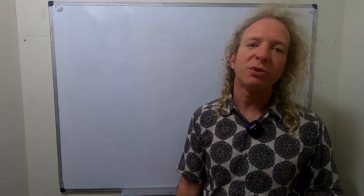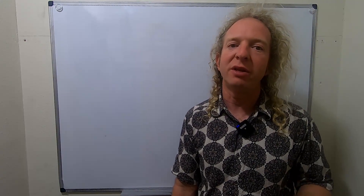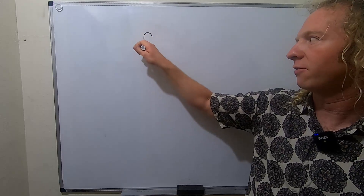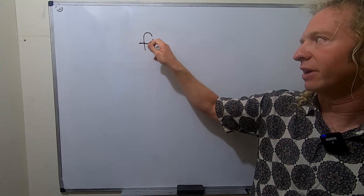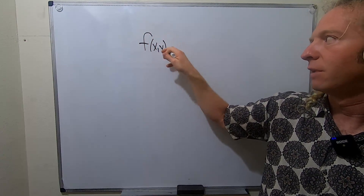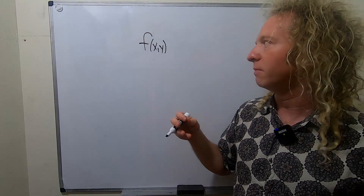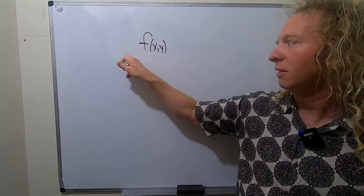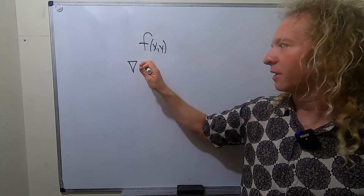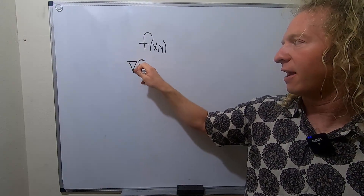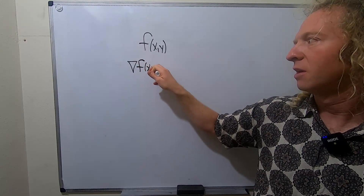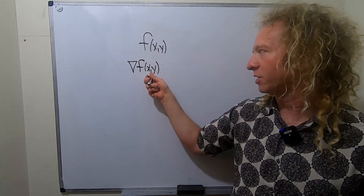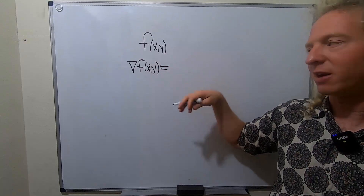In this video, we're going to introduce the notion of the gradient vector. Say you have a function which we'll call f of xy. Then the gradient vector can be defined as follows — it's del, that's how you read that, del of f of xy. So the gradient is an operator. It operates on the function and it spits out a vector.